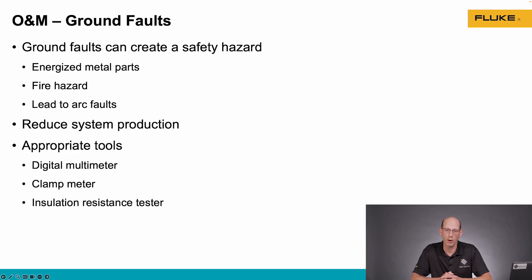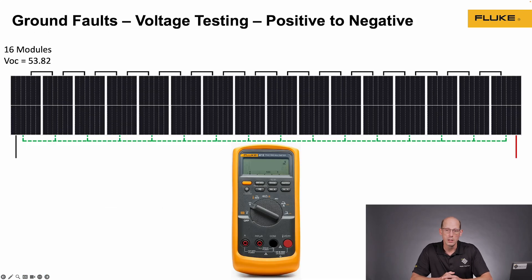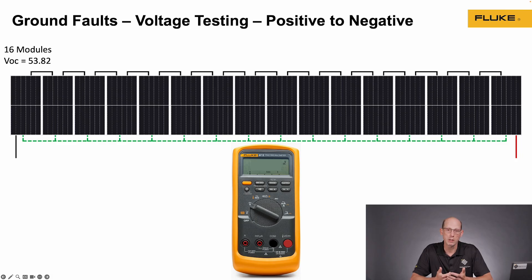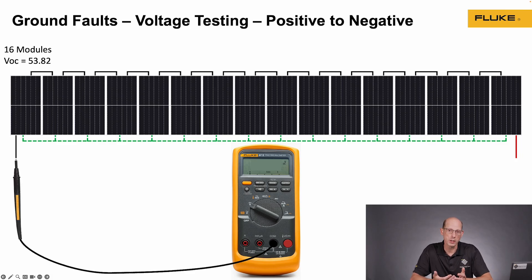We can use different tools to find ground faults. Multimeters and clamp meters are a good option, and also insulation resistance testers to find circuits with low resistance to ground. Here's an example of finding a ground fault using voltage. We have a string of 16 modules wired in series — approximately 53 volts per module. When I measure between the positive and the negative of this string, I should get approximately 861 volts.